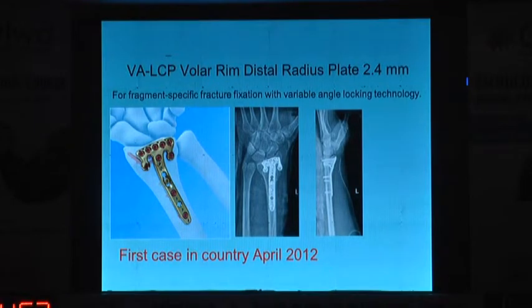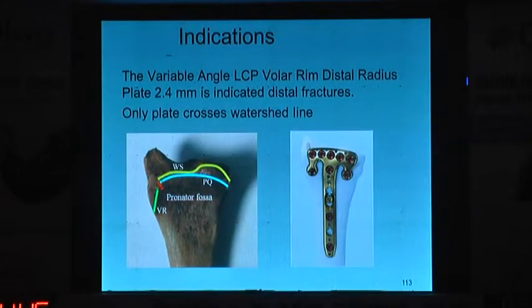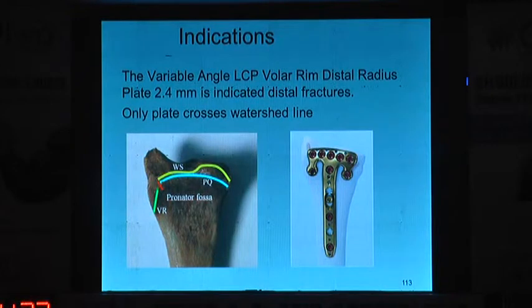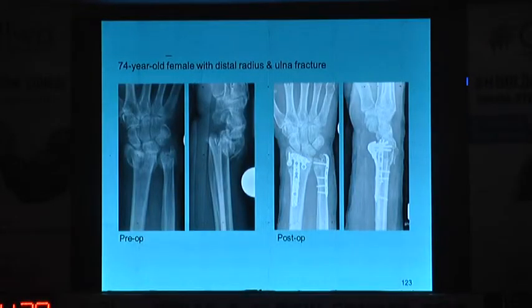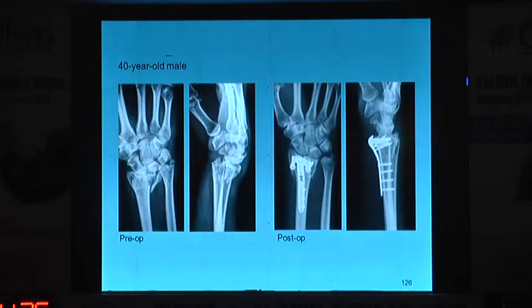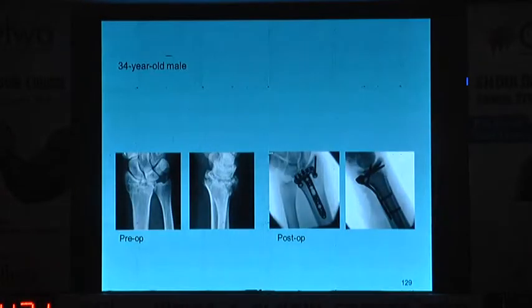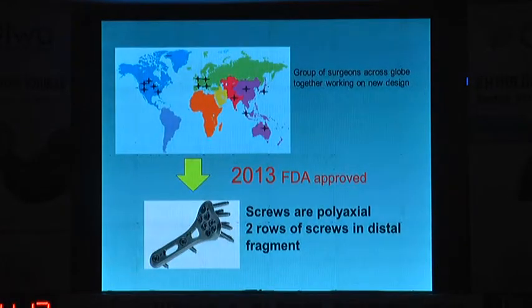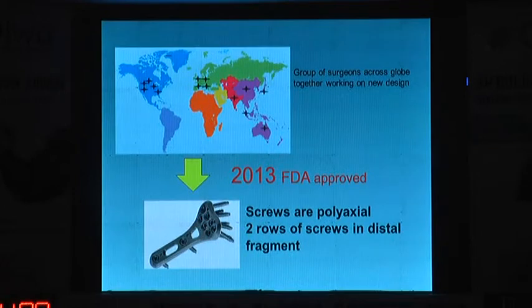In 2012 another plate came for very distal fractures — it goes up to the margin and is the only plate which crosses the watershed area. It's not a better plate per se; it has very few indications — specifically whenever there's a volar lip fracture or fractures that are too distal, like intra-articular fractures which are distal and not amenable to fixation by the normal plate. Those can be taken care of by this plate. There was also a project we finished in 2013 — a plate with two rows of variable angle screws — but unfortunately it's not marketed in India.